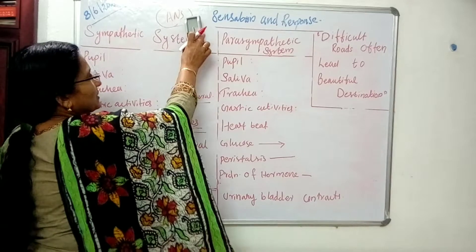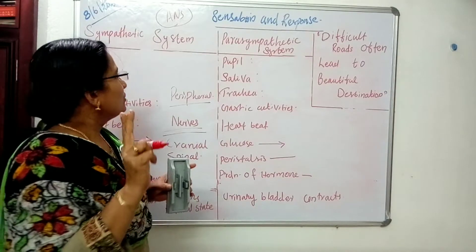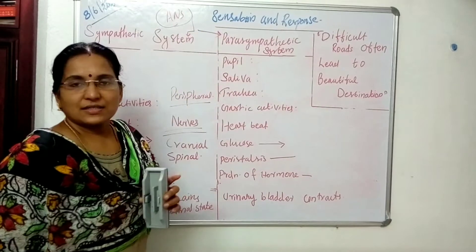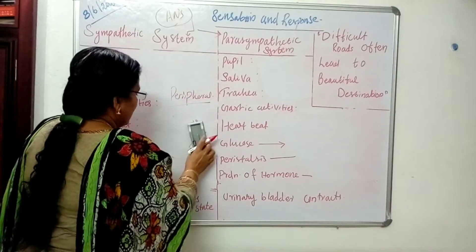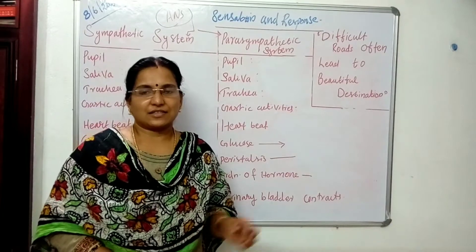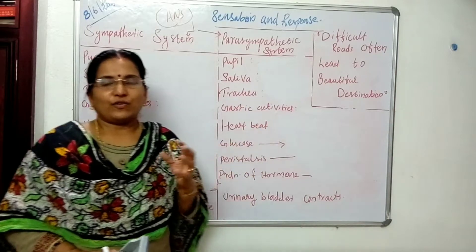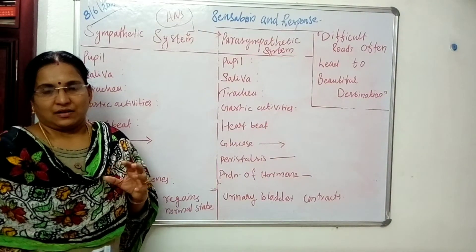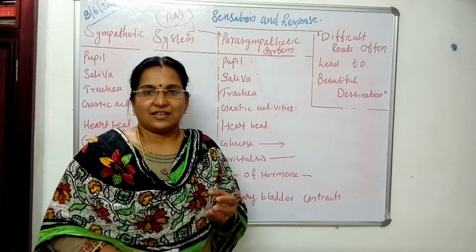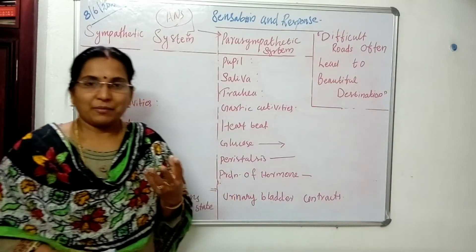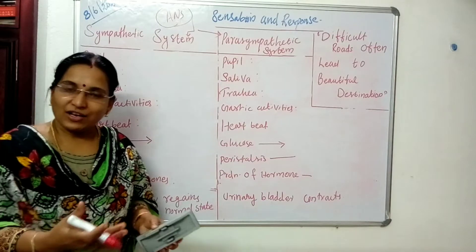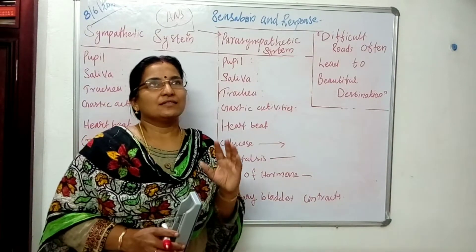The autonomous nervous system is broadly classified into two: the sympathetic system and the parasympathetic system. Whenever reactions take place beyond our conscious area, they are controlled by the autonomous nervous system. Can you find some instances? We all have stress, strain, and fear. Can you imagine an example?